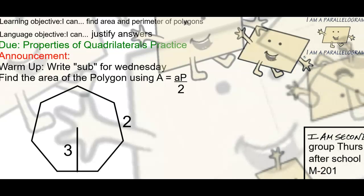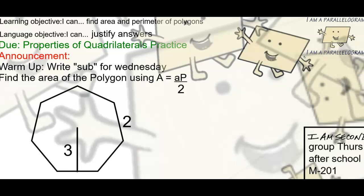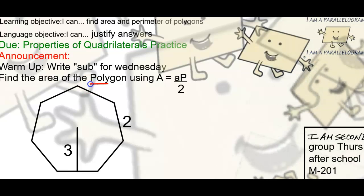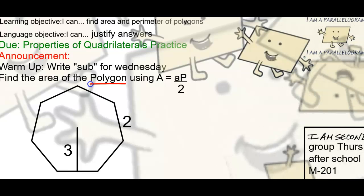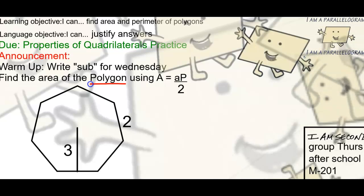I do have a copy of those notes if you missed yesterday or wanted a filled-out version. They're in the blue bin in the back. We went over this yesterday in the video. For a regular polygon, our formula is A = aP/2. Capital A stands for area.